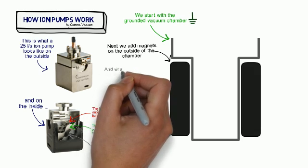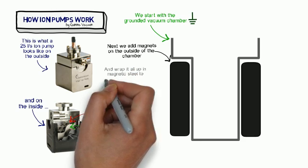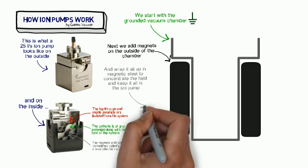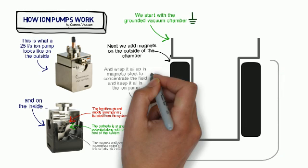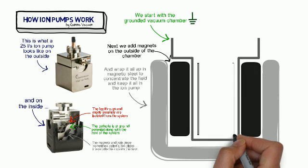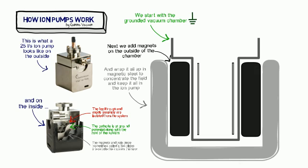Now those magnets are going to create a high magnetic field. And so to concentrate that field just where we want it, which is between the magnets, we put a magnetic steel pull piece or flux plates around that to capture that. And again, on the inside, there's our grounded cathode plates.